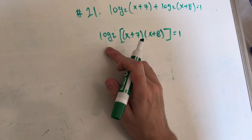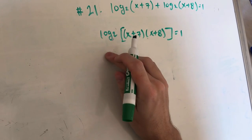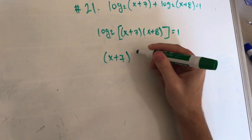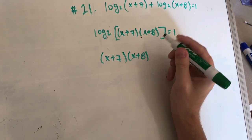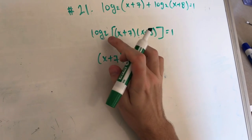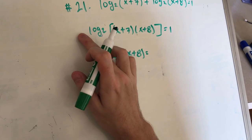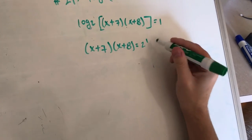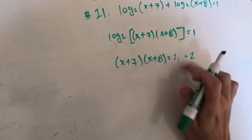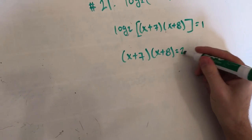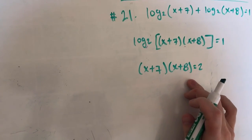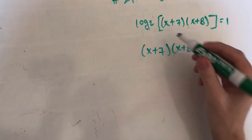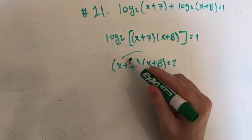We're going to keep our (x plus 7) and our (x plus 8). This becomes our base, and since 1 is the exponent, it's going to be 2 to the 1, which also just equals 2. So essentially you could just throw 2 there — that makes it more condensed. Then we're actually going to FOIL these two. Once we've foiled them out we get x squared plus 8x plus 7x plus 56, equals 2.